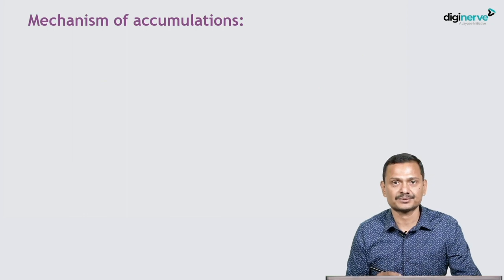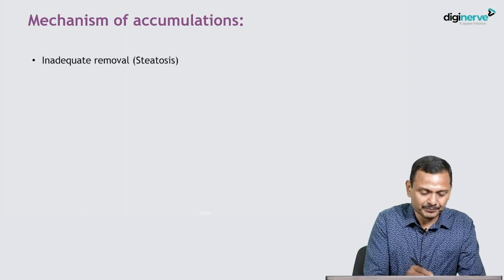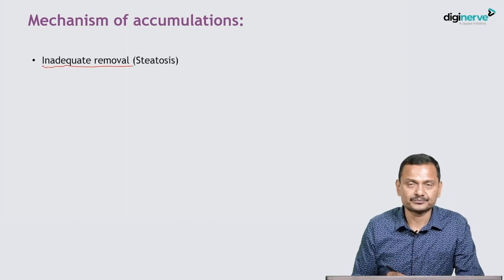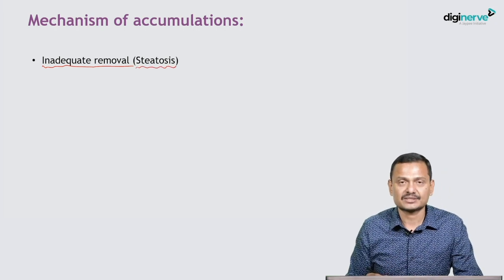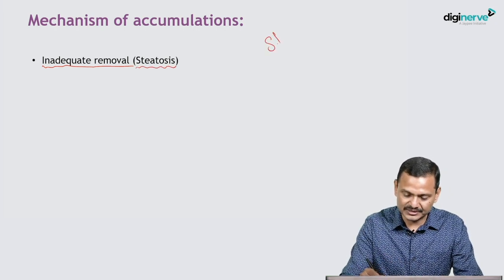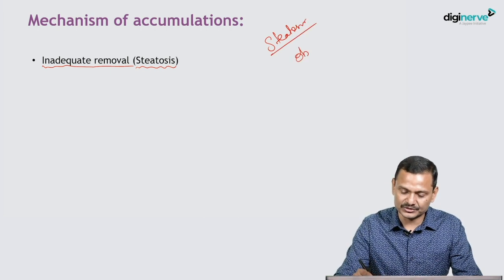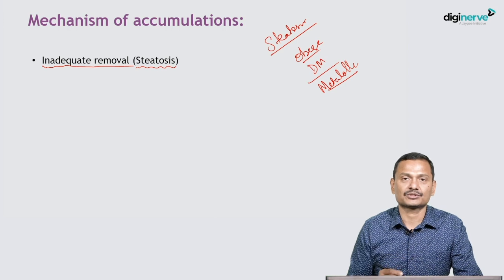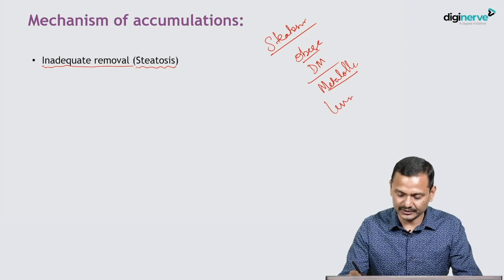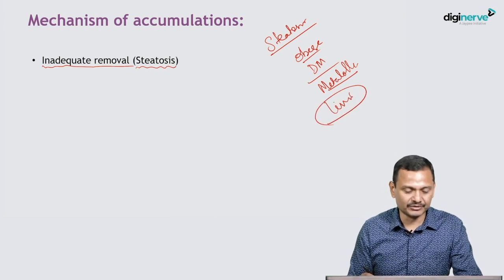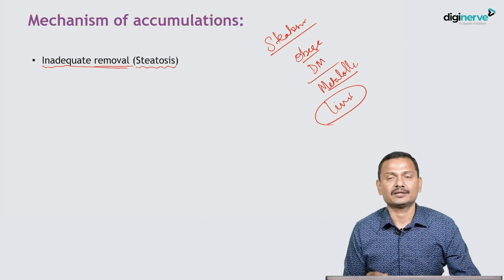What are the mechanisms of accumulation? The first is inadequate removal, and the most common example is steatosis — which means fat accumulation. If there is excess fat in the body, for example in obesity, diabetes mellitus, or metabolic syndrome, there is a chance of accumulation of fat, most commonly in the liver. This is fatty liver due to inadequate removal.